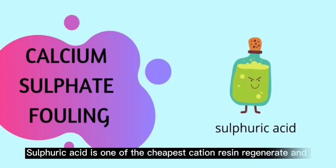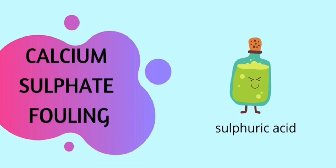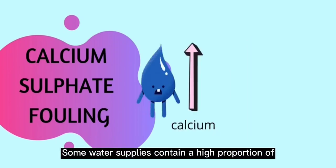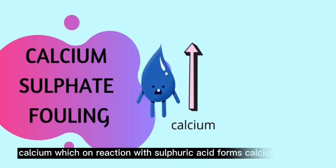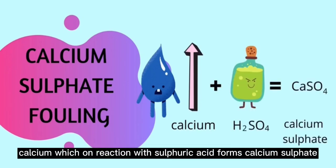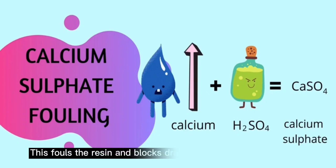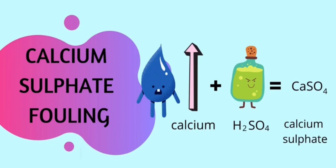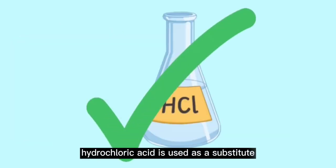Fourth, it may also cause calcium sulfate fouling. Sulfuric acid is one of the cheapest cation resins to regenerate and is widely used. Some water supplies contain a higher proportion of calcium, which on reaction with sulfuric acid forms calcium sulfate. This fouls the resin and blocks drain pipes with a build-up of scale. Under such circumstances, hydrochloric acid is used as a substitute.